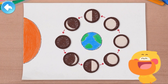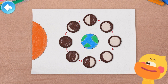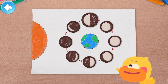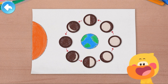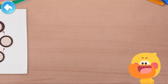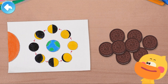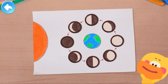We are done with the cookie moon phases diagram. Good job! The moon always gets bigger from a new moon to a full moon, and becomes smaller from a full moon to a new moon. This is the law of the phases of the moon. We only need eight sandwich cookies and a finished moon phases diagram. Make it with your mom and dad.